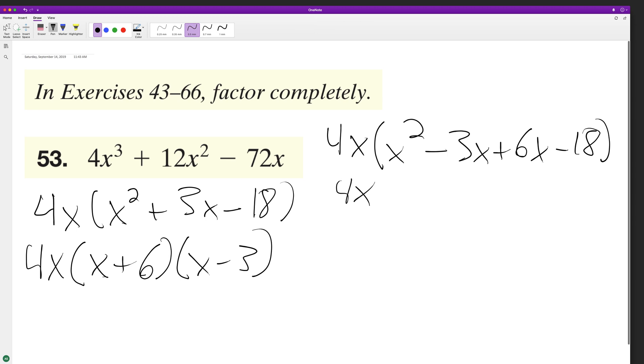All right, so distributing this, 4x cubed, and this middle term here is going to be positive 3x, and then plus 4x times 3x is positive 12x squared, and then minus 72x.